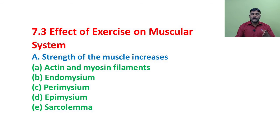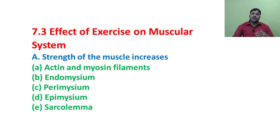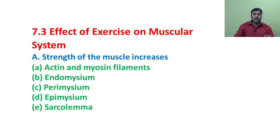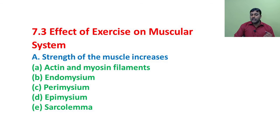Strength of the muscle increases: by strength training, many developments of the muscle take place. Muscle hypertrophy occurs due to the thickening of the following parts of the muscle: actin and myosin filaments, endomysium, perimysium, epimysium, and sarcolemma.